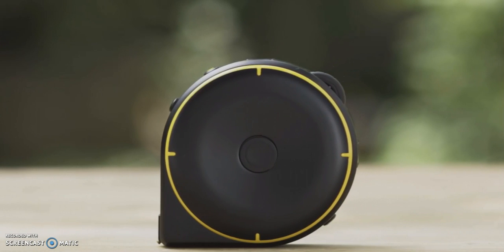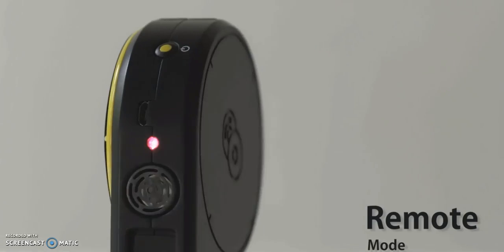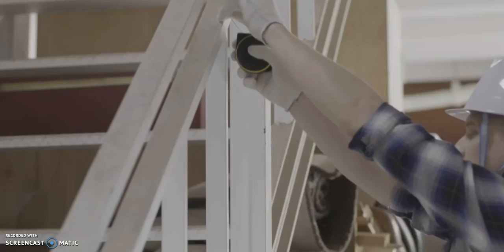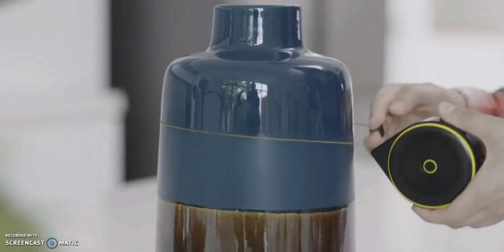Bagel has three different modes: String Mode, Wheel Mode, and Remote Mode. String Mode is great for measuring straight lines, curves, and around corners.